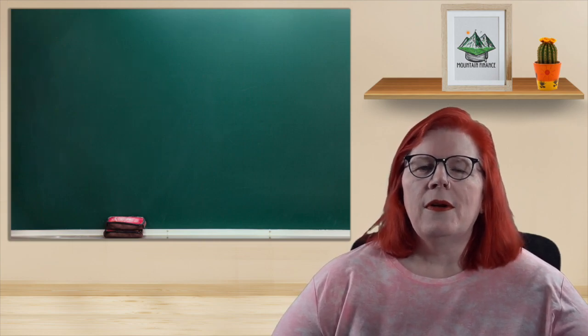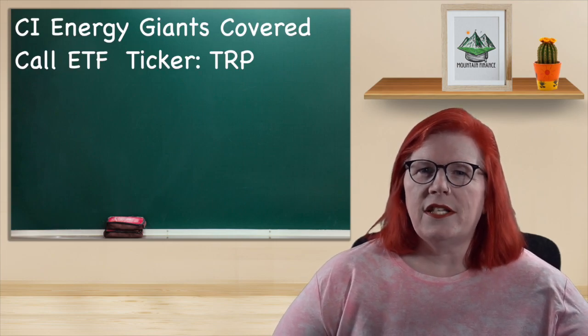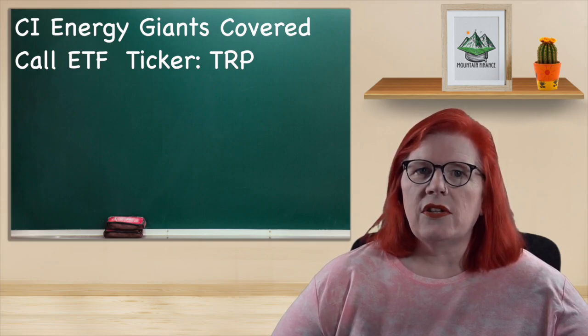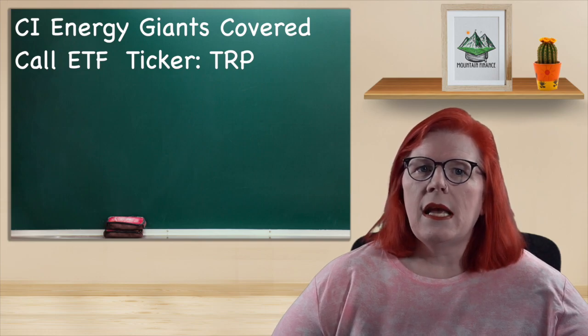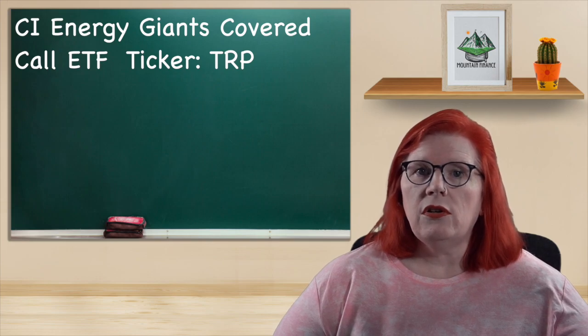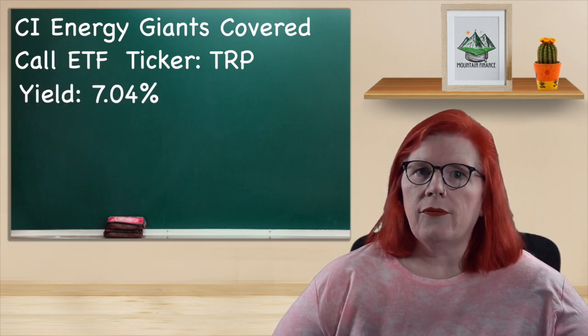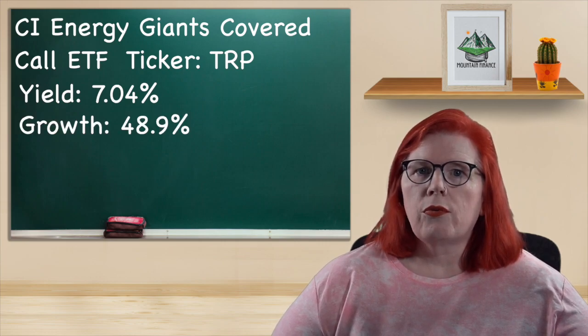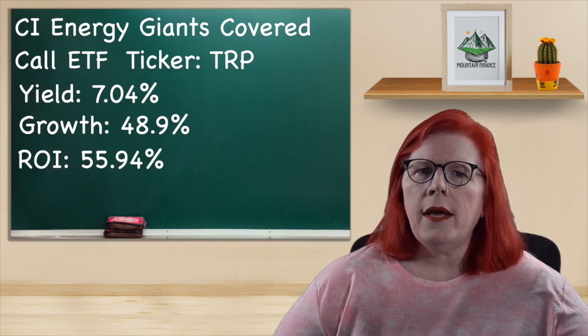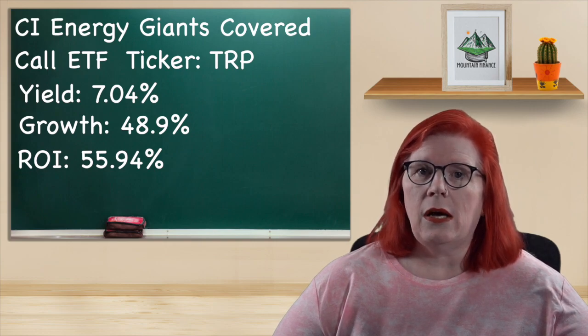One more ETF is the CI Energy Giants Covered Call ETF which has a ticker of nxf.b. This ETF invests in the largest non-Canadian energy companies and it utilizes covered calls to make higher distributions. They have a dividend yield of 7.04 percent which is paid out quarterly in the form of 13.1 cents per share. Their growth for the last year was 48.9 percent for a total ROI of 55.9 percent. Yep, that's definitely not bad at all.